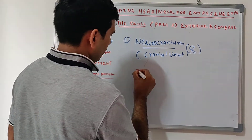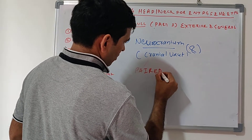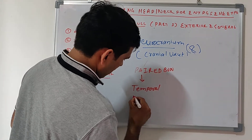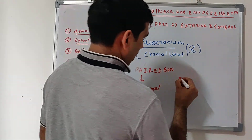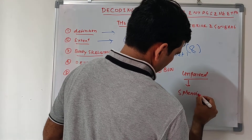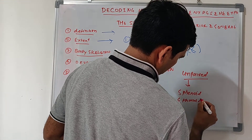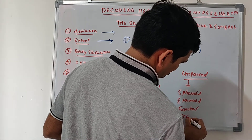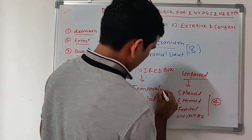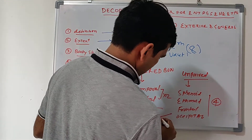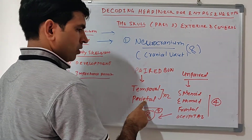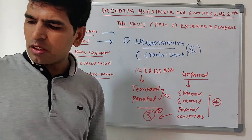Paired bones of the neurocranium are temporal bone and parietal - that is 4. Unpaired part of the neurocranium: sphenoid, ethmoid, frontal, and occipital - that is 4. So total 8 bones. Paired bones: temporal and parietal. Unpaired: sphenoid, ethmoid, frontal, and occipital.